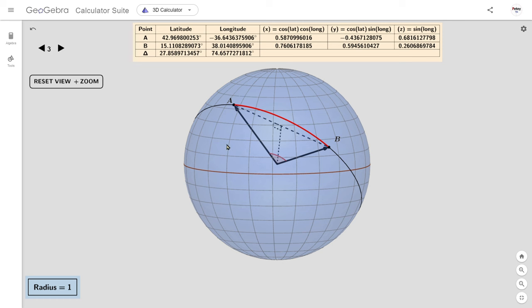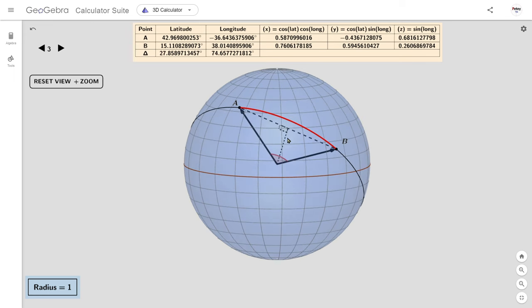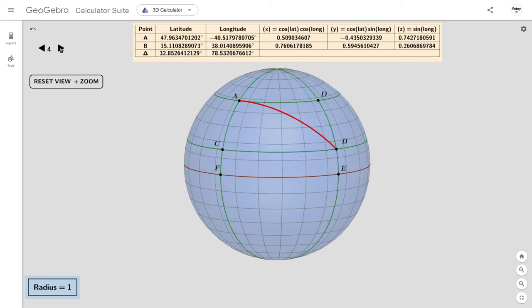We've already covered finding the chord length on any great circle. It's 2 times the sine of half the central angle. But we now need to find it in terms of the longitudes and latitudes of points A and B. To facilitate this, let's use a bit of symmetry and add some more points to the surface of this sphere.